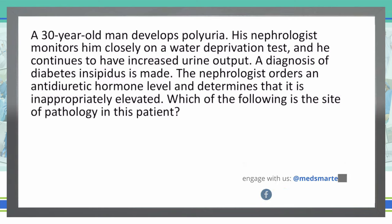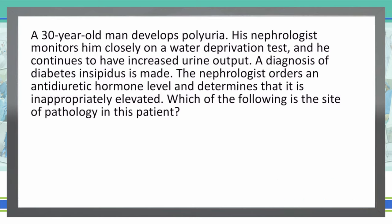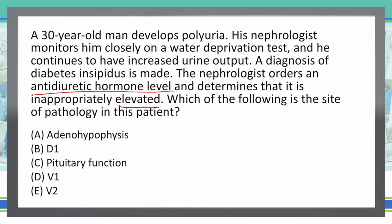Which of the following is the site of the pathology in this patient? This is a pretty straightforward question. They give you all the information you need to know, and they want to know, if a patient has diabetes insipidus with an elevated ADH level, where are they having a pathology occur? So take a second, look at these answer choices, come up with your answer, and write it in the comment box below.